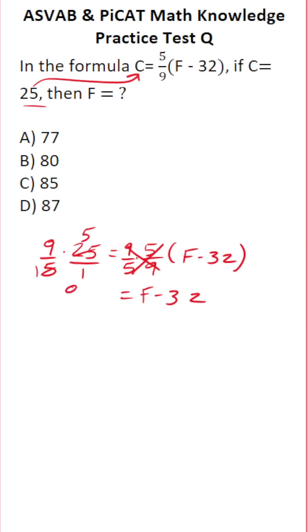This is 9 over 1, which is just 9 times 5 over 1, which is just 5. 9 times 5, you should know, is 45. So this is 45 equals F minus 32. To get F by itself, we're just going to add 32 to both sides now. This crosses out, leaving you with F over here.